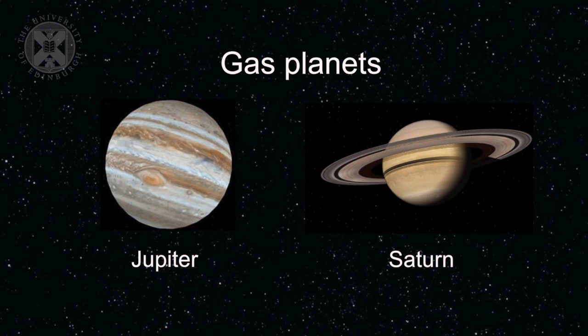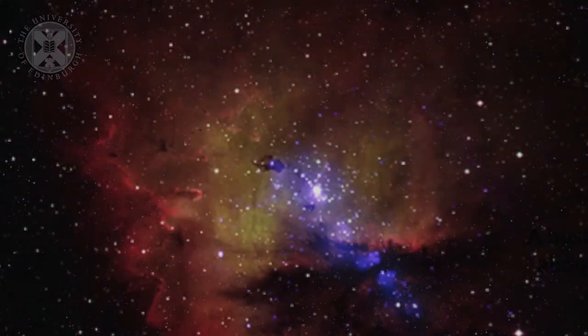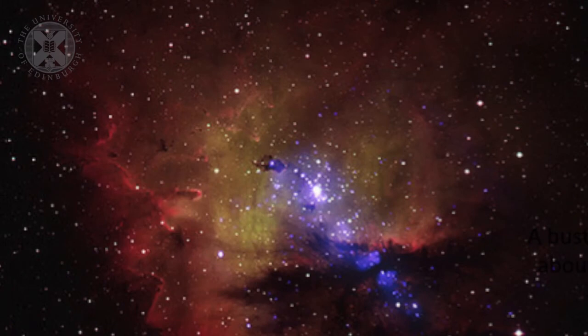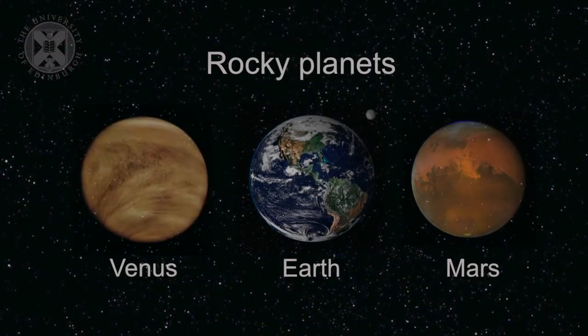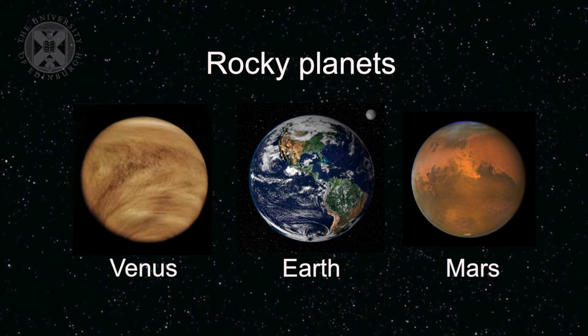In the inner regions of that nebula, small pieces of rock begin to coalesce. These planetesimals come together and eventually form small rocky planets like Venus, Earth, and Mars. So there's a very distinctive separation in the types of planets that can be formed in nebulae.